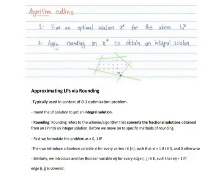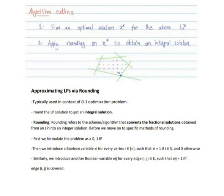We can now see the algorithm outline. As the first step, find an optimal solution x-star for the LP using any standard linear programming algorithm. Note that x-star might have fractional coordinates, so it might not correspond to any valid vertex cover. As the second step, apply rounding on x-star to obtain an integral solution. After rounding, we hope to get an integral solution that corresponds to a valid vertex cover.